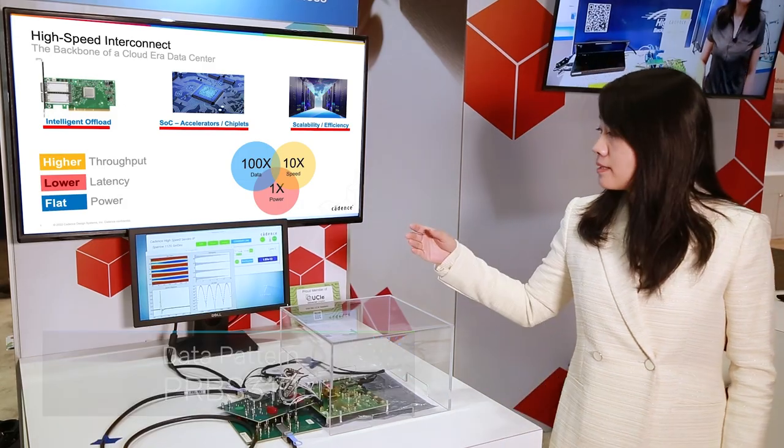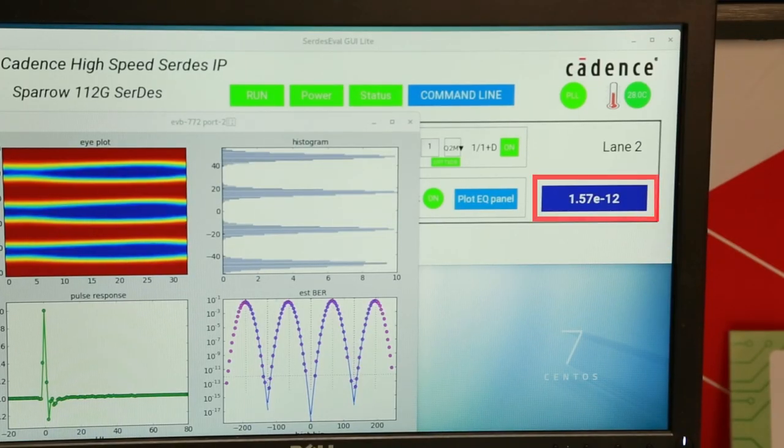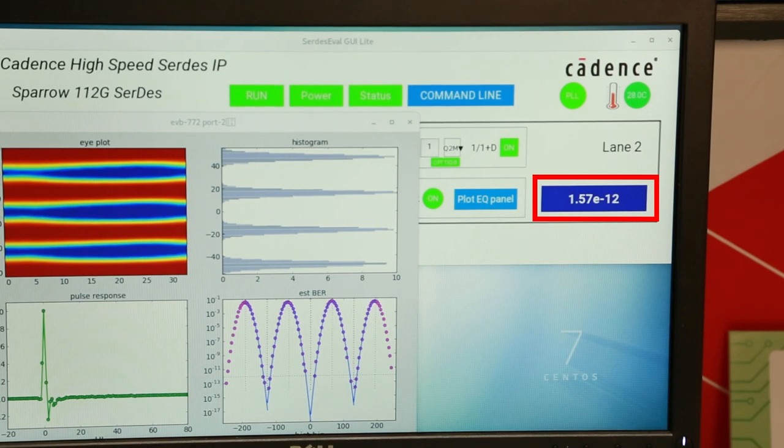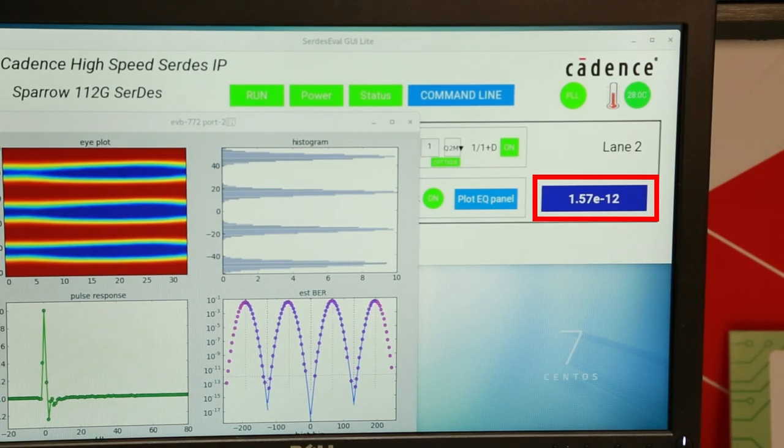As shown in the graphical user interface, perfect BER is less than 2E-12 which is 8 orders of magnitude better than the standard spec.